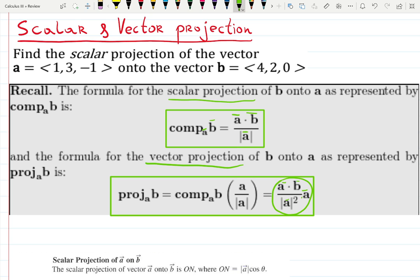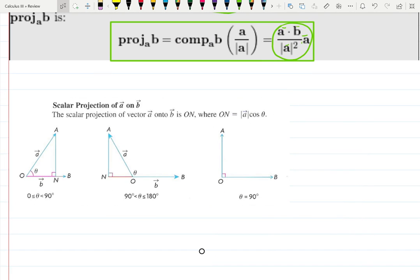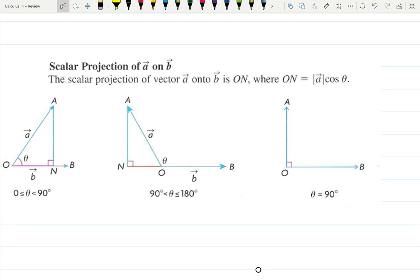You should not be confused that here they're calling the vector A and B just like in the formula. You always need to be careful which one is projected on which vector because that matters. Scalar projection of A on B or scalar projection B onto A is not the same thing.